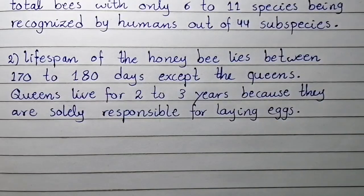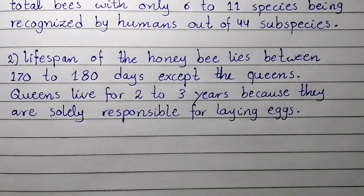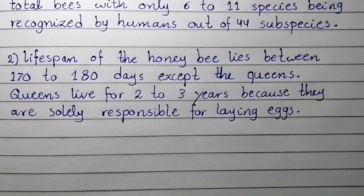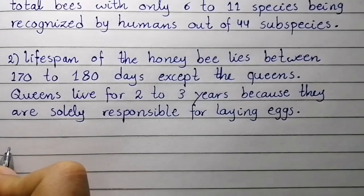Point number two: the lifespan of the honey bee lies between 170 to 180 days, except the queens. Queens live for two to three years because they are solely responsible for laying eggs.